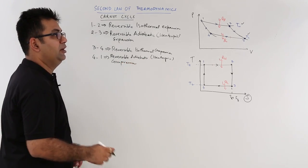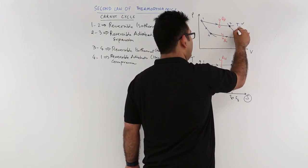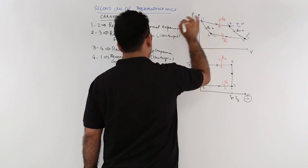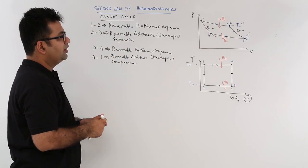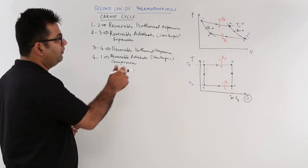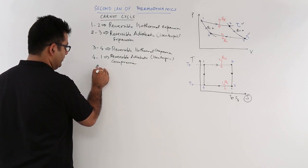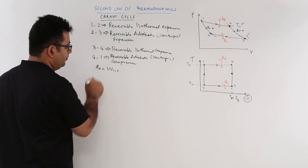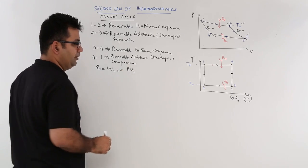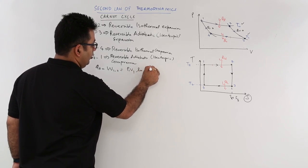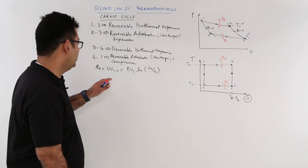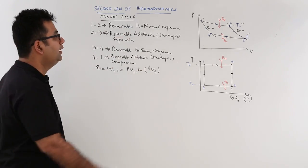Now let's look at the mathematical values for it. So 2, 3, Q is 0. 4, 1, Q is 0. Let's look at the values. So for 1, 2, it's an isothermal process. So Q will be equal to W. So Q is equal to W1,2, that is equal to P1 V1 into natural log of V2 by V1. So this is the value of the isothermal work which is equal to the heat absorption at temperature Th.